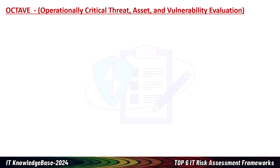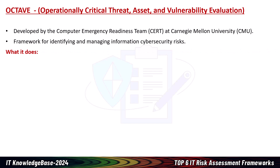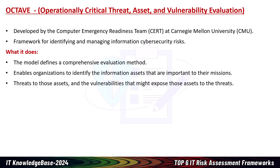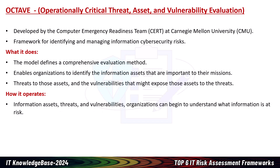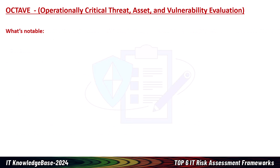Number five: OCTAVE — Operationally Critical Threat, Asset, and Vulnerability Evaluation — was developed by the Computer Emergency Readiness Team, or CERT, at Carnegie Mellon University in Pittsburgh, Pennsylvania. It is a framework for identifying and managing information and cybersecurity risks. The model defines a comprehensive evaluation method that enables organizations to identify the information assets important to their missions, the threats to those assets, and the vulnerabilities that might expose those assets to threats. By putting together information about assets, threats, and vulnerabilities, organizations can understand what information is at risk and design and implement a protection strategy to reduce overall risk exposure.